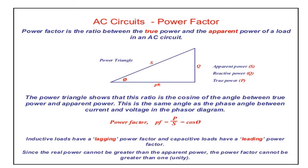Power factor equals P divided by S, which equals cos θ. So cos θ equals true power divided by apparent power. That is the power factor equation.